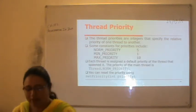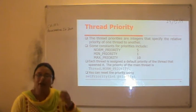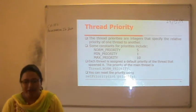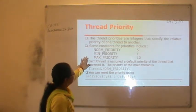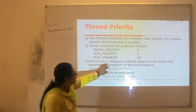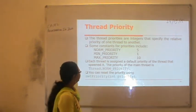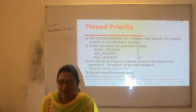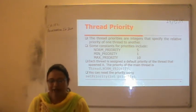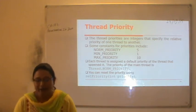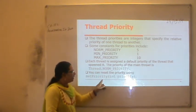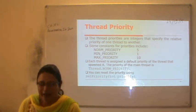Thread priority is very important. All threads in your program have a priority, which is an integer value. By default, all threads have a priority of 5, which is the normal priority. The minimum priority is 1 and the maximum is 10. If you do not specify a priority, it will default to 5. You can reset the priority using the setPriority method, passing an integer value.